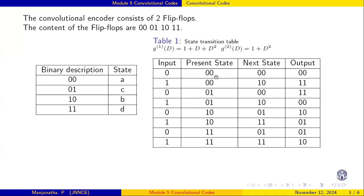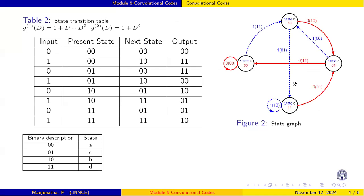This table is very important to draw the code tree, trellis diagram, or state diagram. Now we will see how to draw the state diagram. There are four states: A, B, C, D — representing 00, 01, 10, and 11 respectively.